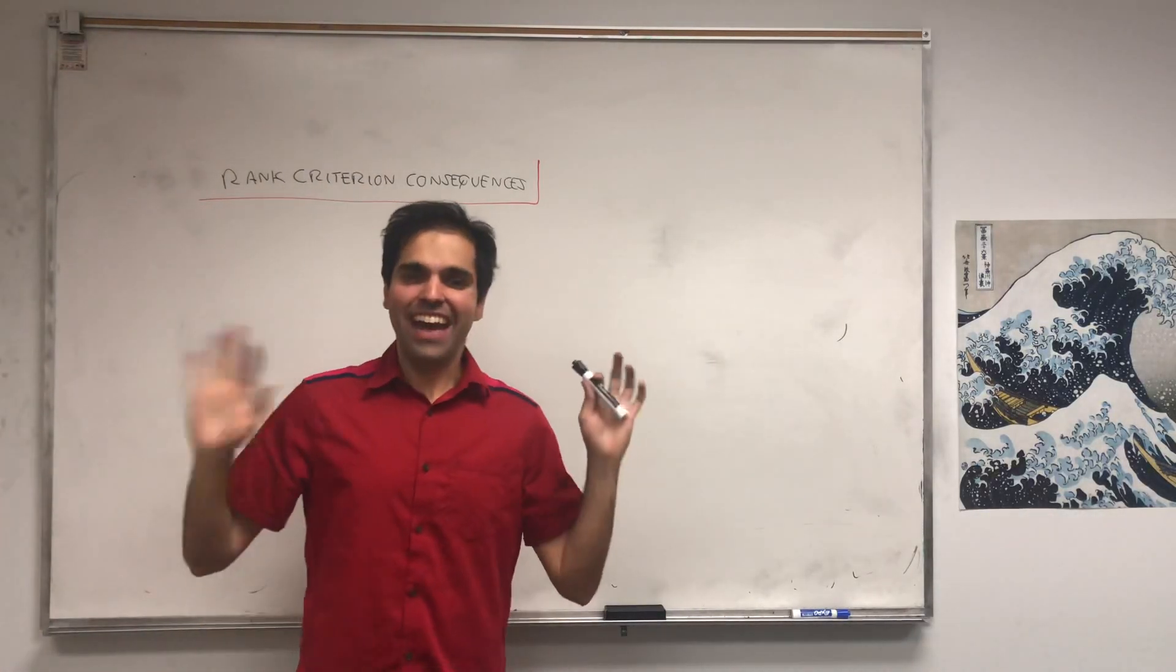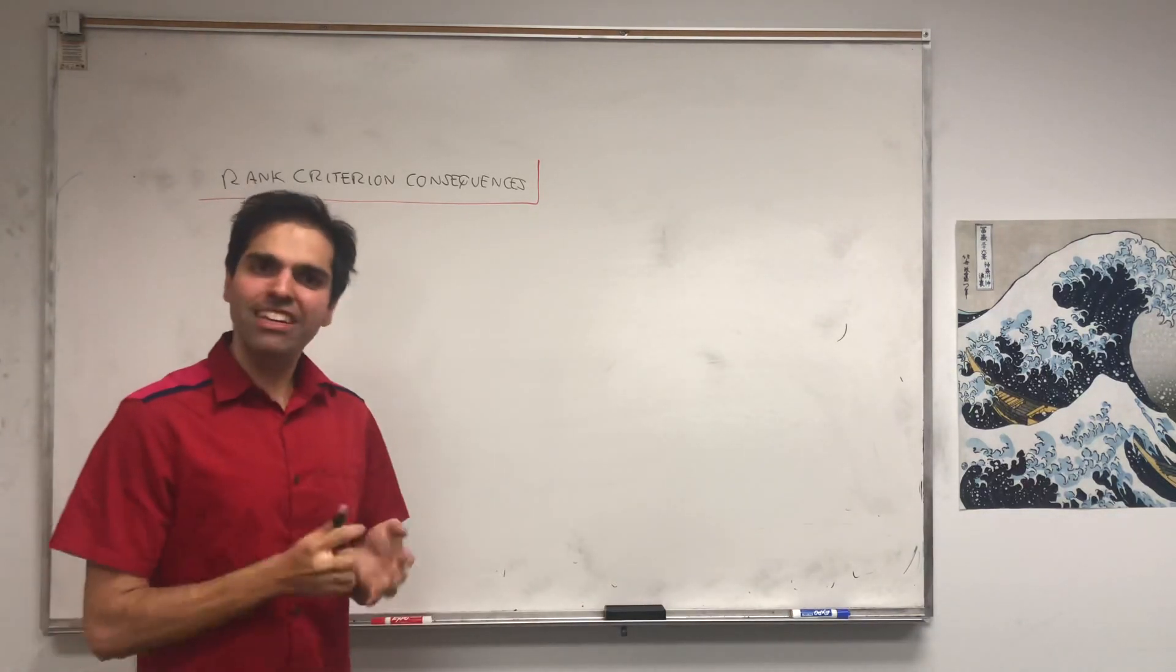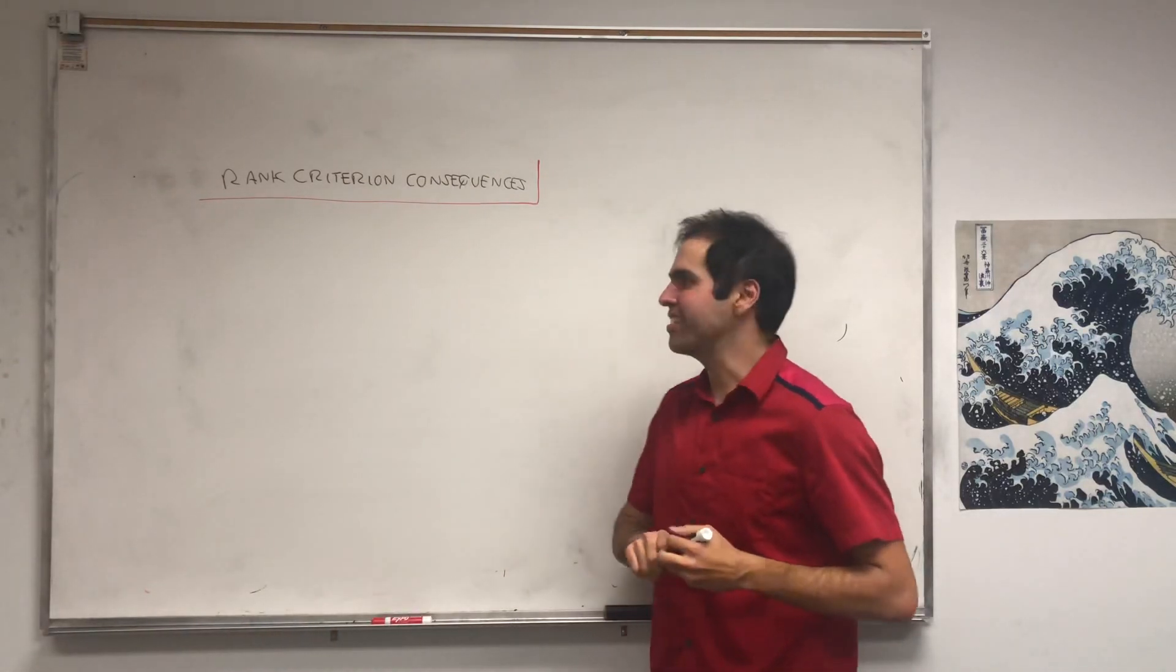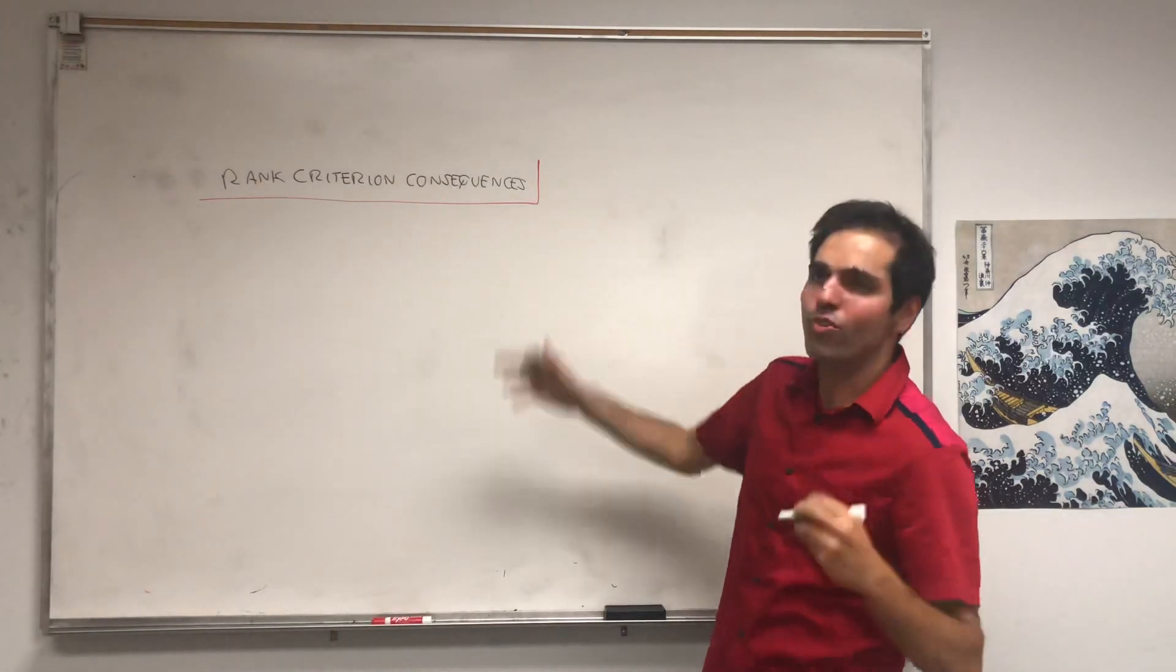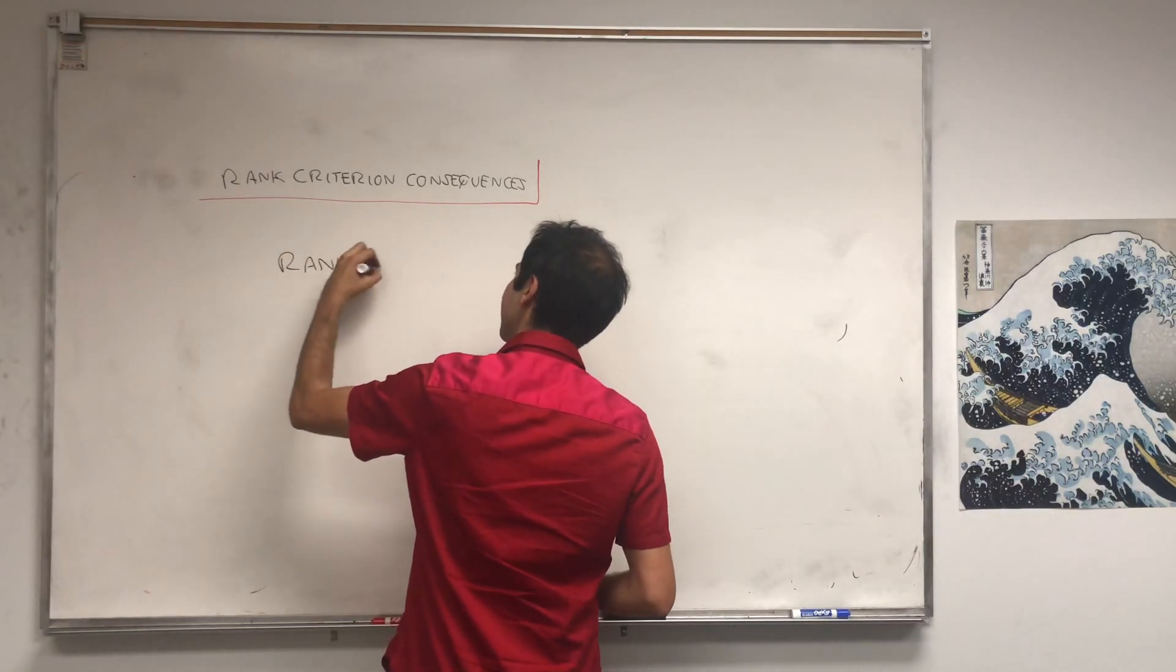All right, thanks for watching, and previously on That's So Pi Am, I gave a very nice consequence that tests if a system is consistent or not. That's what I call the rank criterion. And what does the rank criterion say?